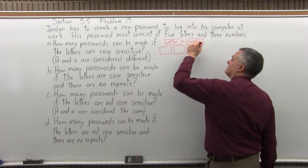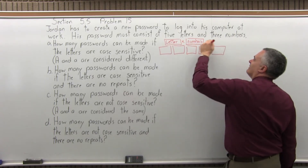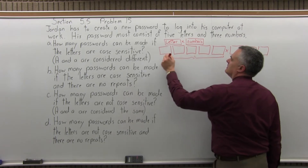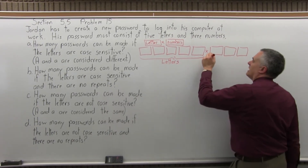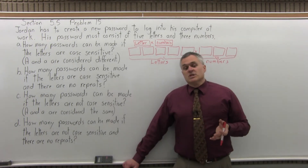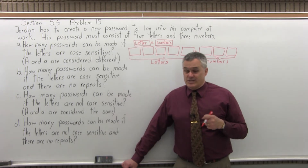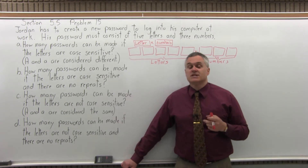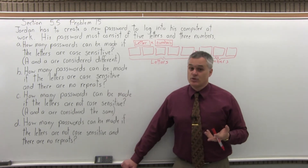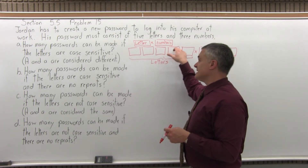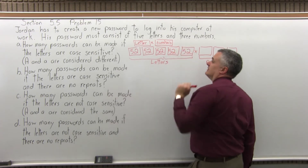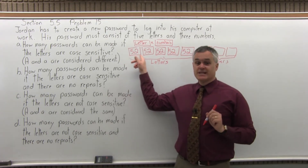We can set this up with five boxes to choose our letters — one, two, three, four, five — and then three boxes for the numbers — one, two, three. The first five positions are letters and the last three are numbers. In terms of the letters, there are twenty-six letters in the alphabet, but when they're case sensitive it becomes fifty-two, because twenty-six lowercase plus twenty-six capital combined for a total of fifty-two. So when the letters are case sensitive, in each one of the boxes for the letters there are fifty-two different choices — twenty-six lowercase and twenty-six capital.